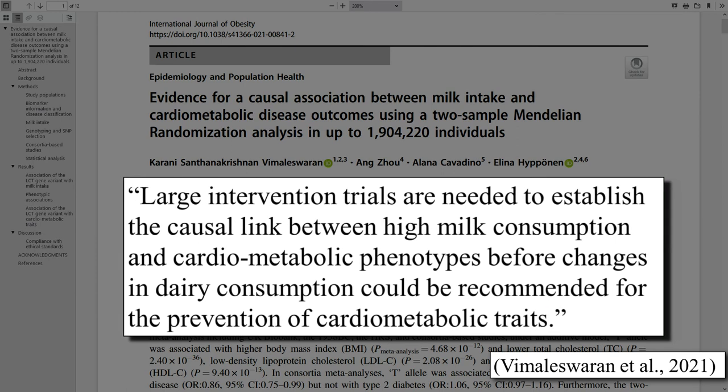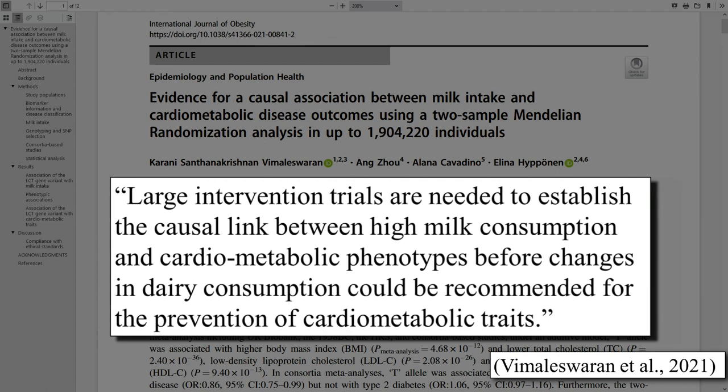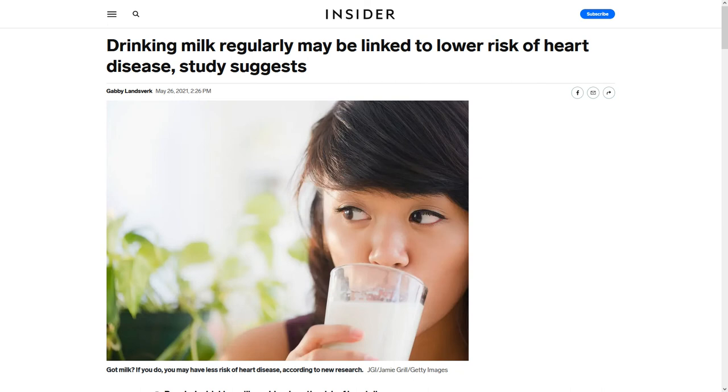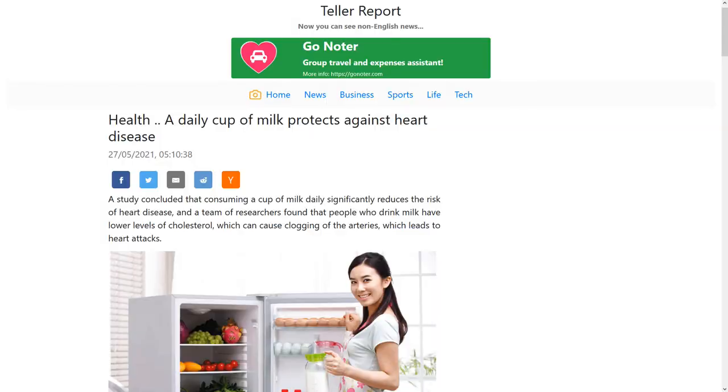Indeed, the authors of the study even admit as much and I quote, large intervention trials are needed to establish the causal link between high milk consumption and cardiometabolic phenotypes before changes in dairy consumption could be recommended for the prevention of cardiometabolic traits. But that hasn't stopped the news media from doling out their own dairy consumption recommendations. Even if they're not explicitly framed as such, you can of course expect these stories to have a direct influence on consumer behaviors, especially amongst those at increased risk of cardiovascular disease. This is extremely irresponsible journalism.